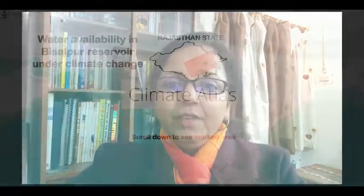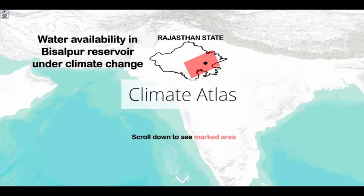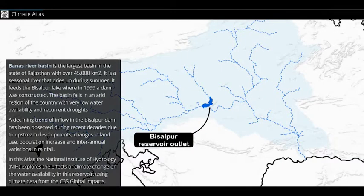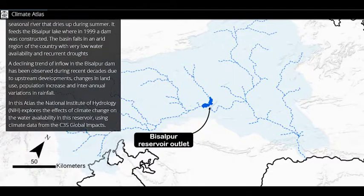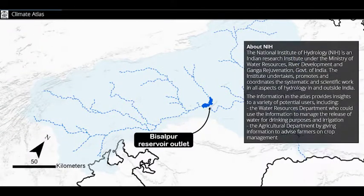We are working with the Rajasthan State Water Resources Department in the Water Resources and Agriculture sector. We needed climate change information to assess its impact on water availability and agriculture production in the Banas River Basin up to the Bissalpur Reservoir, which is used for drinking water supplies to major cities and irrigation to the command area downstream.